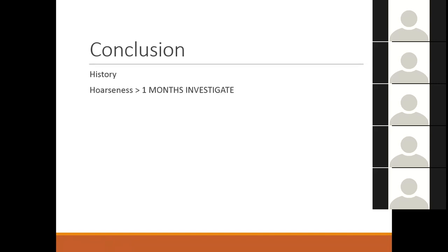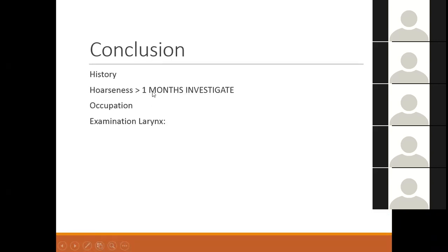In conclusion, if hoarseness has lasted more than one month it must be investigated. If a polyp or nodule is seen on the vocal cord, remove them. Anyone with a more than four-week history of hoarseness should see an ENT doctor, as the larynx should be examined. The most important simple symptom to clarify is whether the hoarseness is constant or intermittent — this gives a fair idea of the diagnosis. History and clinical examination remain the most important parts of patient management.